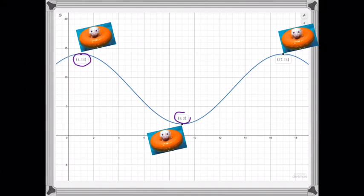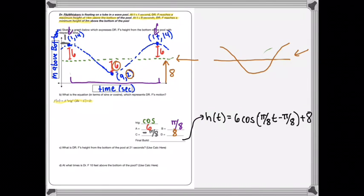And then at 9 seconds, he's going to be 2 meters, and then right back up to 17, 14, which is exactly what we planned out in our sketch. So what we're going to do is answer the questions below using a calculator because we don't know how to solve trigonometric functions all that well quite yet. We're going to get there.